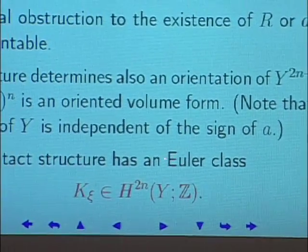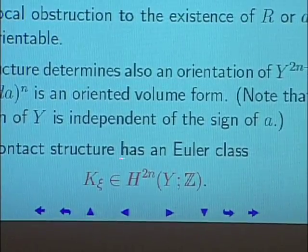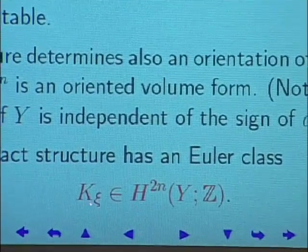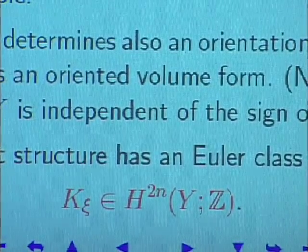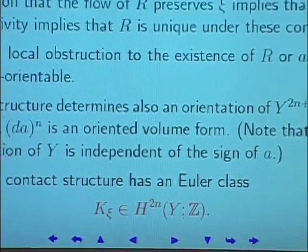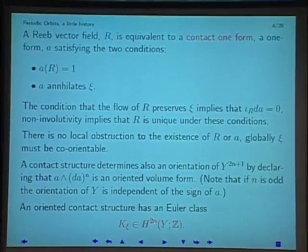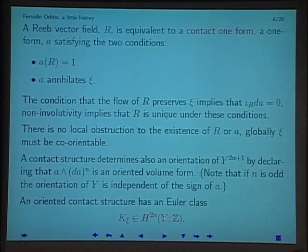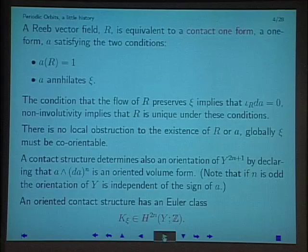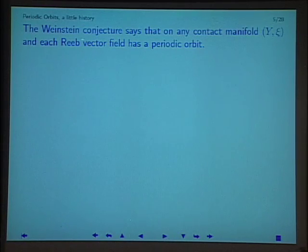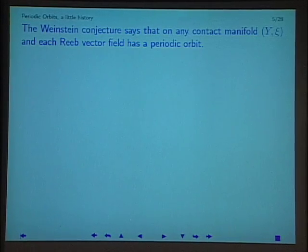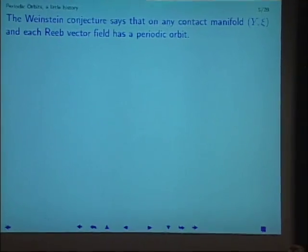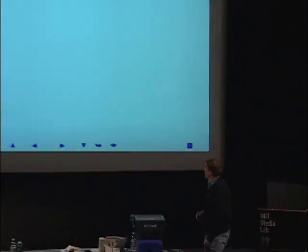If I have an oriented contact structure, it has an Euler class. We have this 2n-plane field inside our (2n+1)-manifold, and I'll call the Euler class k of xi. In the n=1 case, a 3-manifold, there's a two-dimensional cohomology class. The Weinstein conjecture says that on any contact manifold (Y, xi), for each Reeb vector field, there's a periodic orbit for the corresponding dynamical system.